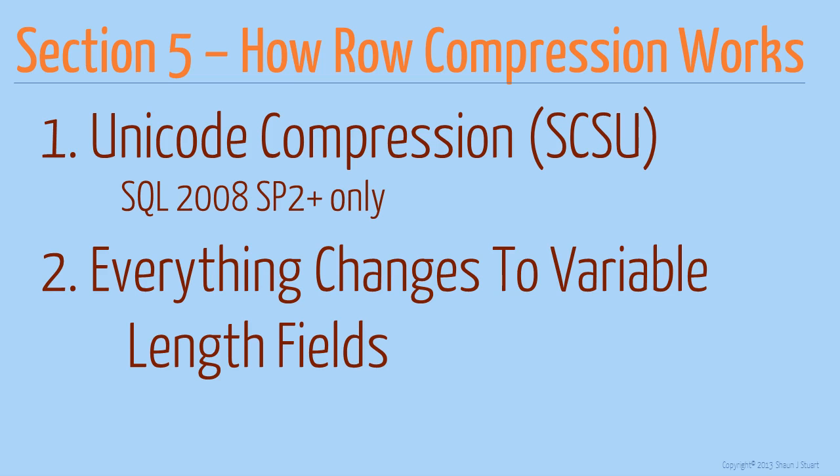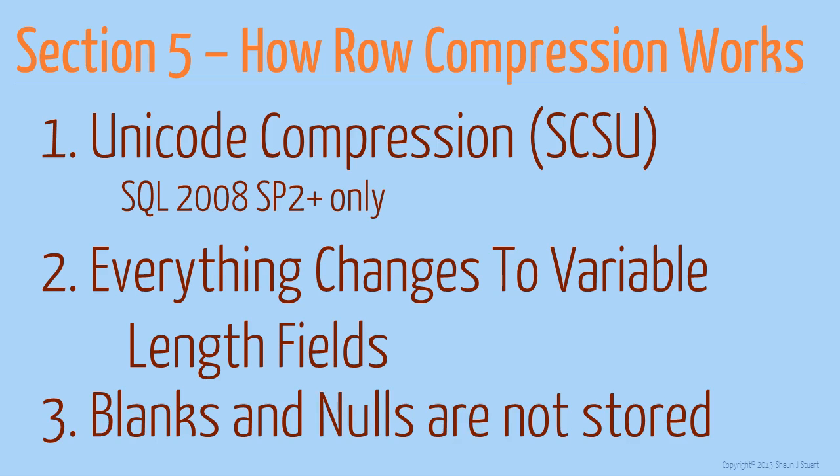As a side note, decimal fields are stored using the var decimal data type which was introduced in SQL Server 2005 SP2. So if your table already uses that data type, those fields will not be compressed anymore. And lastly, row compression implements a new variable length row format that reduces the metadata storage requirements — if you remember all those bytes we used to indicate record types and offsets that we talked about back in section 3. This reduces the row overhead from 2 bytes down to 4 bits, or one half of a byte. Also, blanks and nulls are stored within the metadata info, so they take up no room at all in the actual data portion of the record.